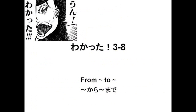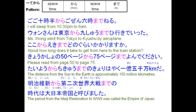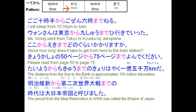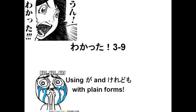3-8: saying 'from...to' using kara made. The pattern is that we take some point in space-time, put kara after it to say we've come from that point, then put another point in space-time with made after it to say we've gone to our destination. For example: I will sleep from 10:30pm to 6am. How long does it take to get from here to the train station? The period from the Meiji Restoration to World War II was called the Empire of Japan.